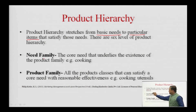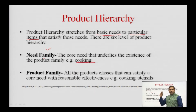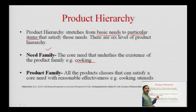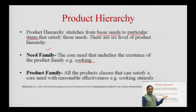The first level of product hierarchy is the need family — the core need that underlies the existence of the product family. For example, if I am going to buy certain utensils for my kitchen, I am looking within the cooking or kitchen category. I need something for the kitchen — cooking. We will work through a common example to build a better understanding.